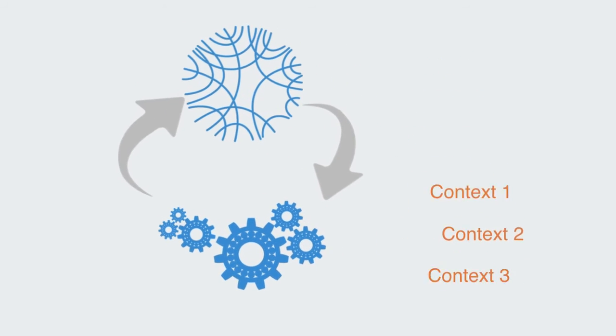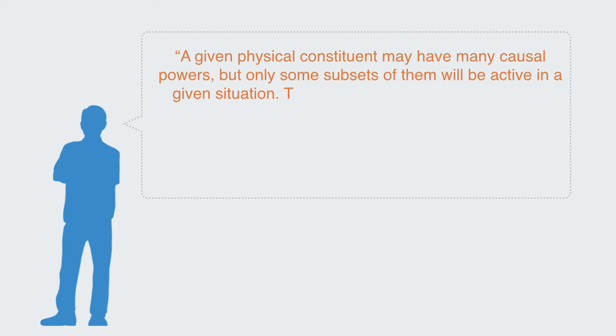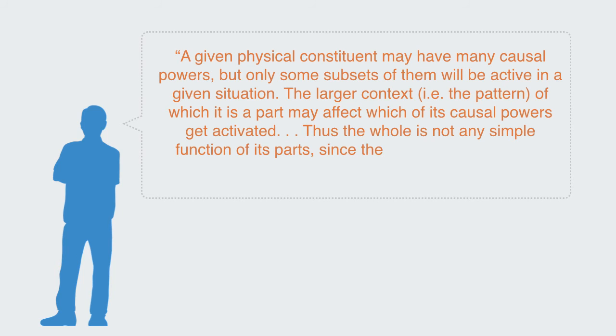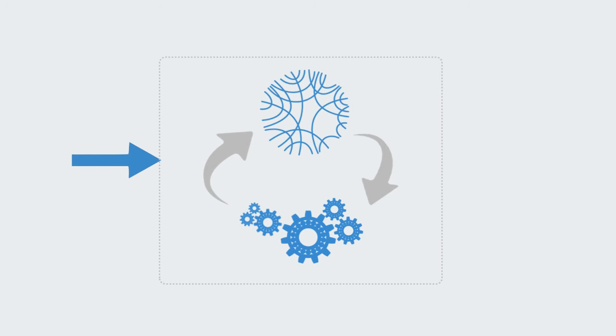Meaning the overall outcome is a product of this more complex interaction between the lower-level cause-and-effect interaction and the upper-level organization that sets the context for that interaction, thus enabling a much greater opportunity for indeterminism. The philosopher Robert Van Gulick describes this phenomena as such: a given physical constituent may have causal powers, but only some subset of them will be activated in a given situation. The larger context, i.e. the pattern of which it is a part, may affect which of its causal powers get activated. Thus the whole is not any simple function of its parts, since the whole at least partially determines what contributions are made by its parts. Thus with nonlinear causality, the cause of events are not directly determined by preceding events, but more emerge out of the bi-directional exchange between the conditions set by the overall system and the local level interactions.